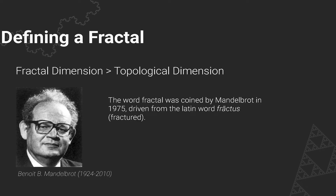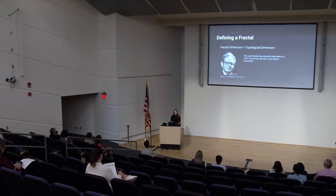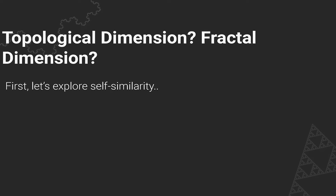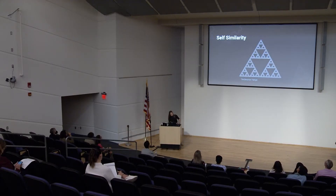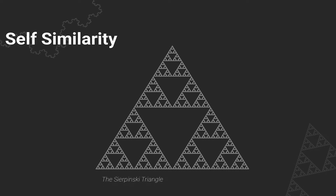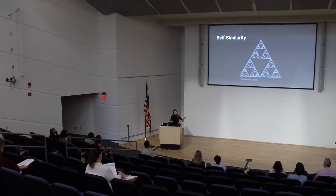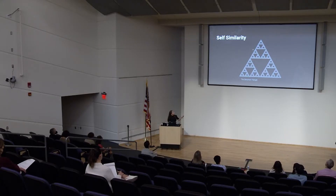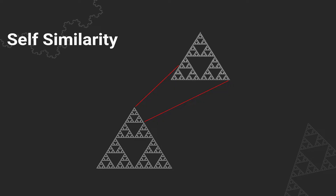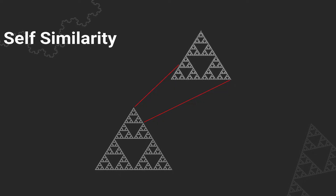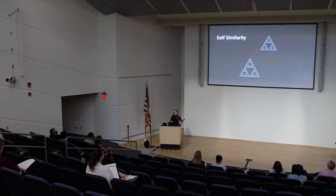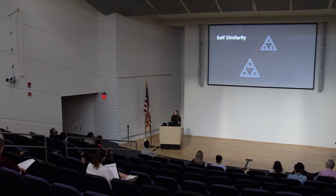He defined a fractal as a figure for which the fractal dimension is greater than and exceeding the topological dimension. To explore this, let's first look at self-similarity. This is the Sierpinski triangle, a very famous shape in dynamics and fractal theory. If you look at the top part of the triangle, each of these triangles composes the larger image as long as you scale it by a factor of three. This is a great example that exhibits self-similarity — a shape composed of the same shape but smaller.